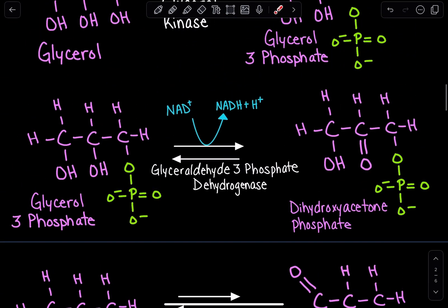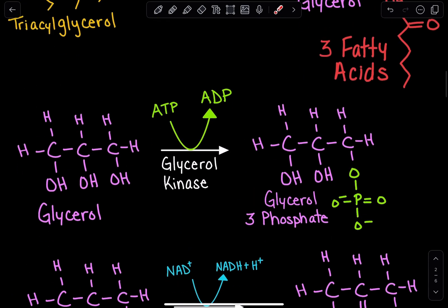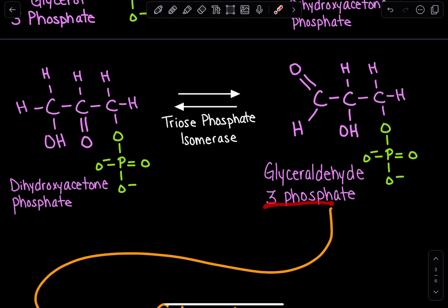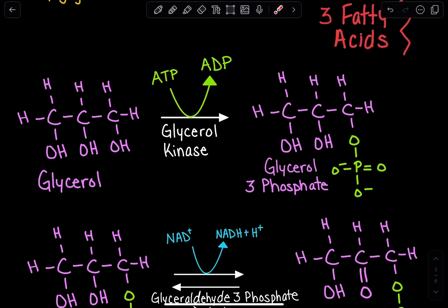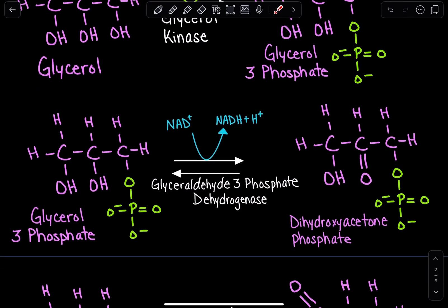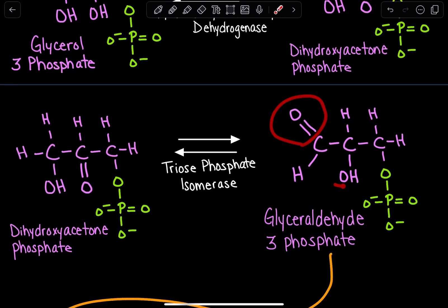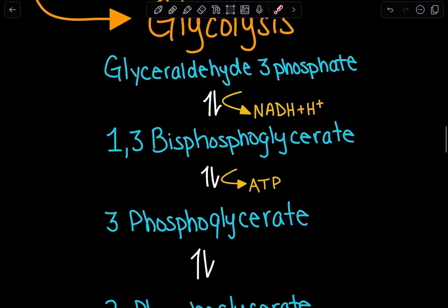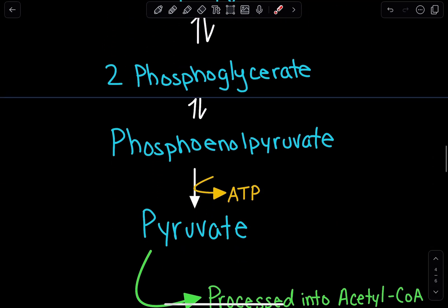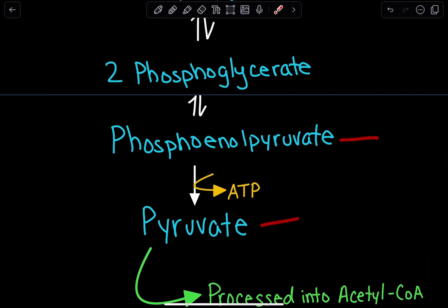The reason for that initial phosphorylation was so we could get glyceraldehyde-3-phosphate, because glyceraldehyde-3-phosphate has a phosphate group. Then we had to do an oxidation-reduction reaction to get that carbonyl, and then we simply switched the position of the carbonyl with the hydroxyl to get glyceraldehyde-3-phosphate. That glyceraldehyde-3-phosphate goes further into glycolysis, being converted into 1,3-bisphosphoglycerate, 3-phosphoglycerate, 2-phosphoglycerate, phosphoenolpyruvate, and finally pyruvate.